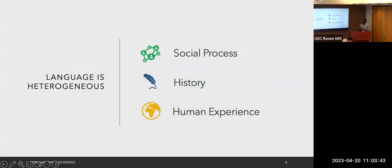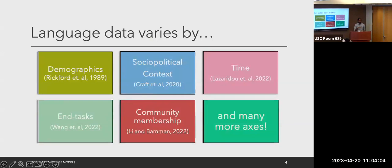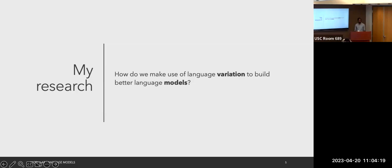The driving observation of my research is that language data is very heterogeneous. It's driven by social processes and intent, by the background and history of the writer, and is really reflective of the diversity of human experience. There are countless studies in NLP, linguistics, and sociolinguistics studying various groups and subsets of texts. My research asks: how do we make use of all this language variation, especially in massive datasets, to build better language models?